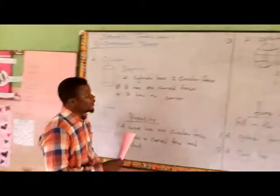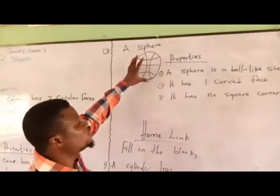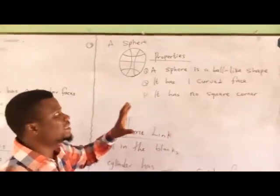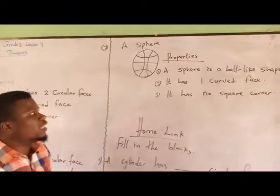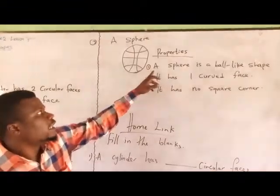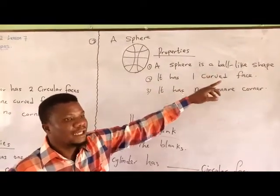We also have a sphere. A sphere is a ball-like shape. It looks just exactly like a ball. One round shape, like that. The properties is this. A sphere is a ball-like shape.